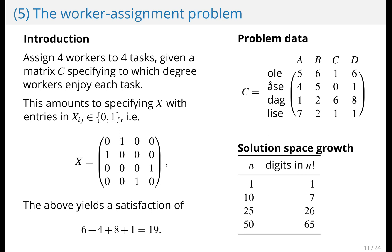The worker assignment problem. You want to assign four workers to four tasks given a matrix specifying to which extent the workers enjoy the tasks. So one approach is to go through workers one by one and give them in order the tasks that they enjoy the most. And this gives you a total satisfaction level of 19. And if you think about it, the solution space grows really quickly.